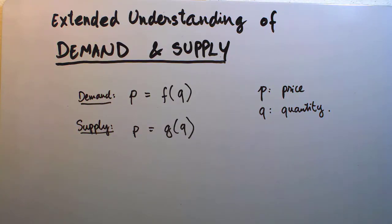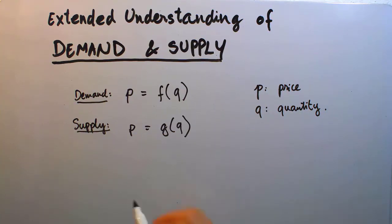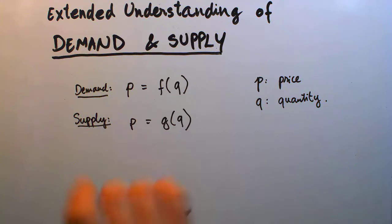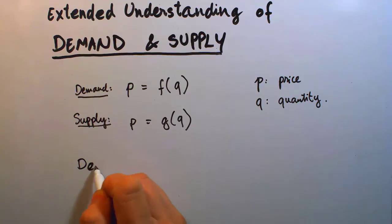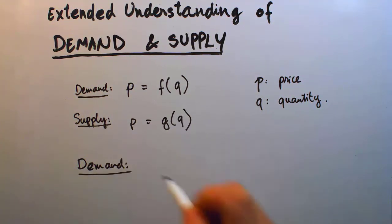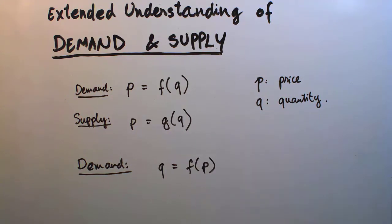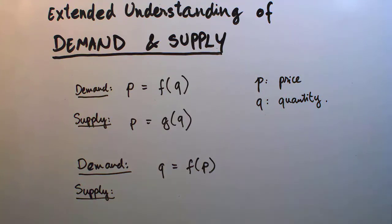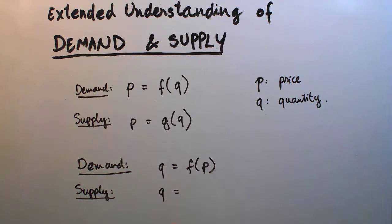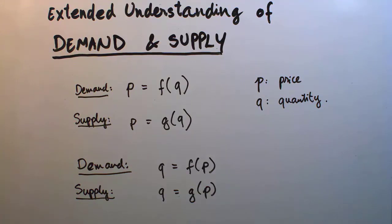Now I'm going to start pointing out examples where there are times we actually need to express the same idea of demand and supply differently. There are times we can rewrite quantity as a function F of pricing. The same applies to supply — we can also re-express the relationship as Q, quantity, as a function of pricing. I'm going to show you how we can extend that understanding through my examples.